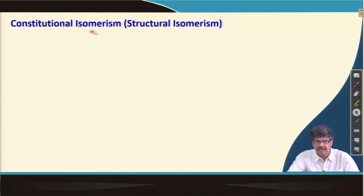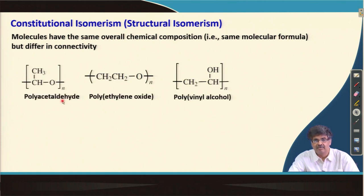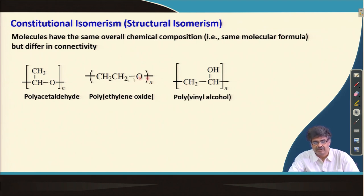Let us discuss constitutional isomerism, which was previously called structural isomerism. Molecules that have the same overall chemical composition — that is, the same molecular formula — but differ in connectivity are called constitutional isomers. For example, if I talk about polymers, look at these three structures. They have the same molecular formula C₂H₄O, but their connectivity are different in each molecule. So these are examples of constitutional isomerism.